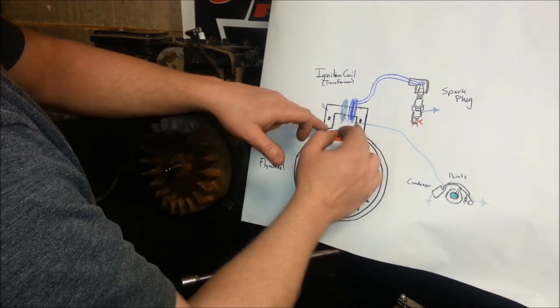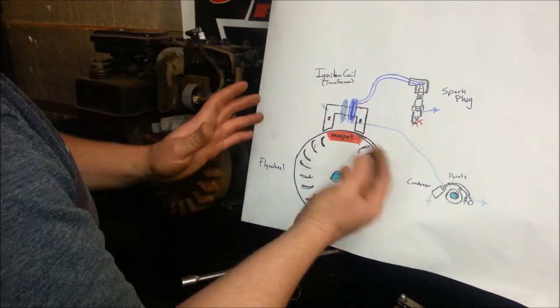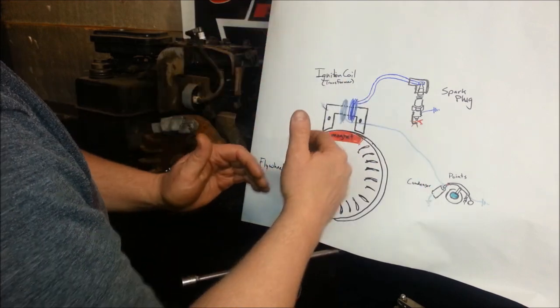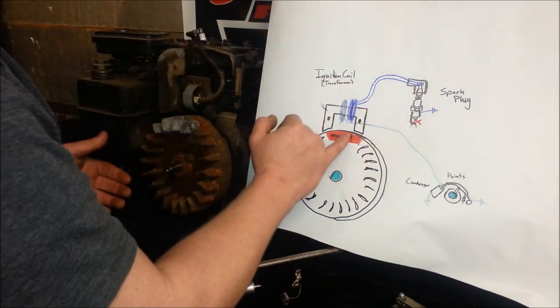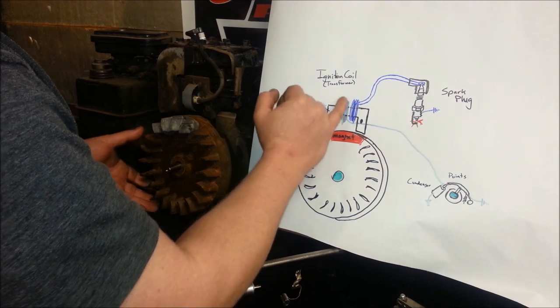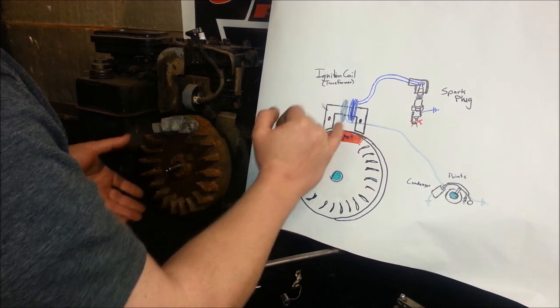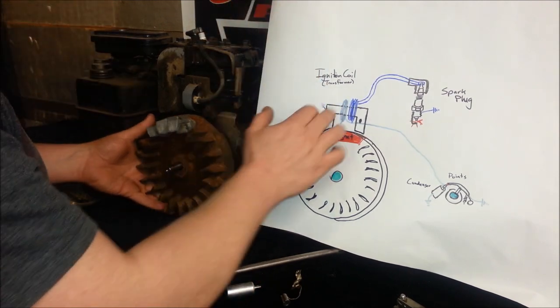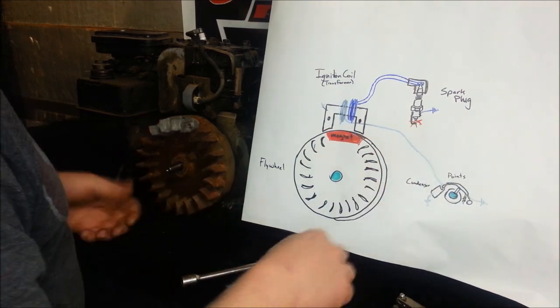But by that time, it's over on the other side and it pushes the north and south field through the other side, causing an alternating current, which is needed to make a transformer work. So electricity is actually built up into our primary coil and starts to generate. And at the same time, our points close for a split second.